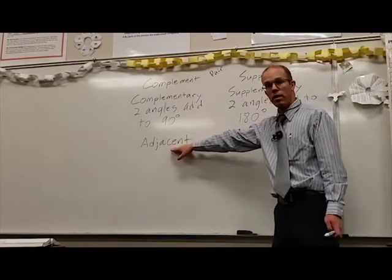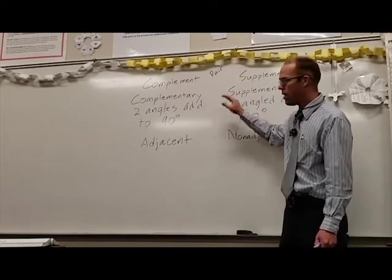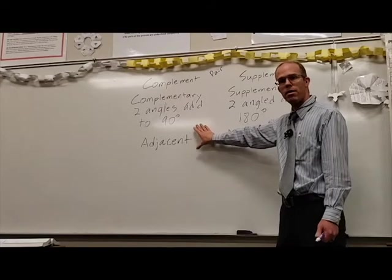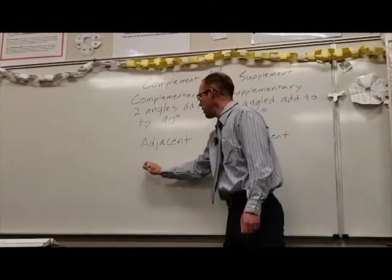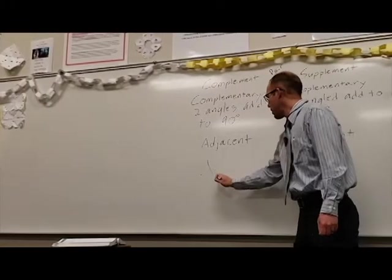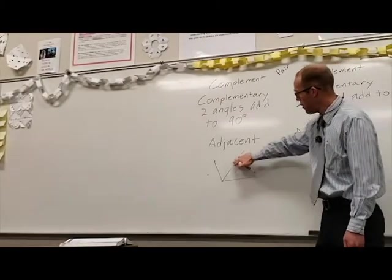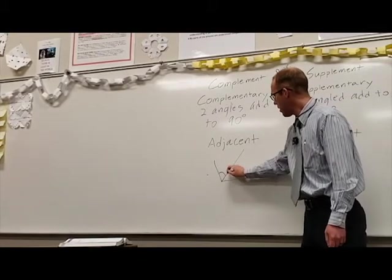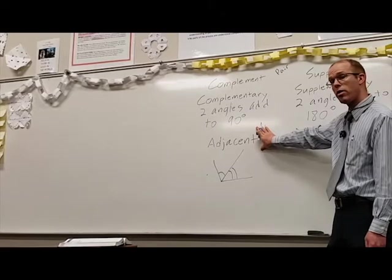These two words right here, adjacent and non-adjacent, might go with these or they might not. Adjacent simply means that those two angles are next to each other. For example, if I drew a pair of angles like this where they have one side that is touching, these two angles are adjacent to each other because they share one side.